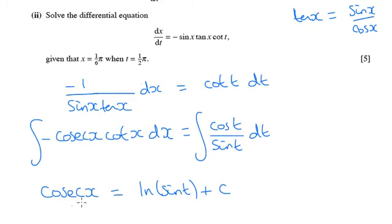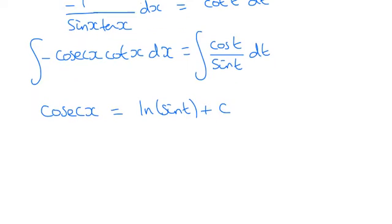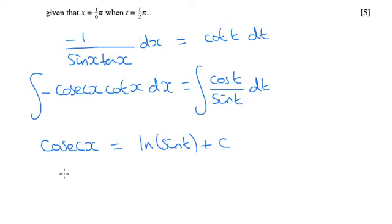So that's already my general equation. I've already found the general equation. We want the particular solution for when x equals π over 6 and t equals π over 2. So I'm now going to substitute those two values in.